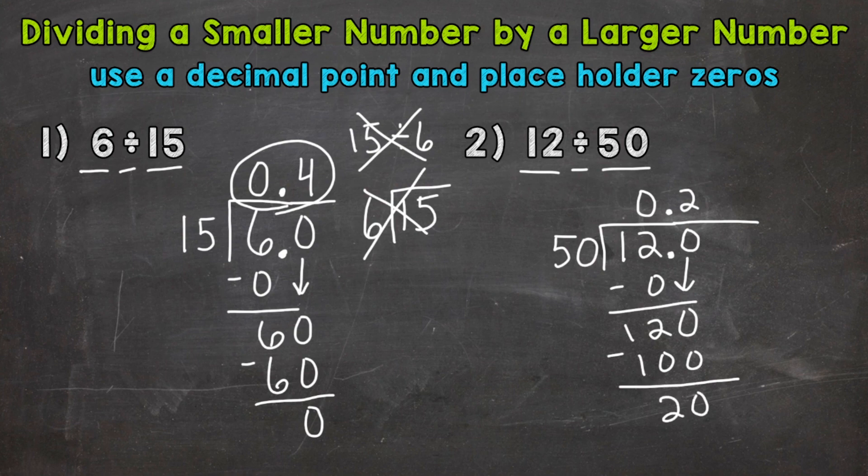So we are still not done. So what we can do, we can use another placeholder zero. Let's place one in the hundredths place. Not changing the value of anything. And we can bring that down.